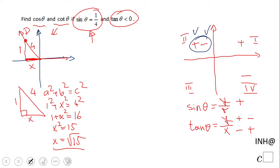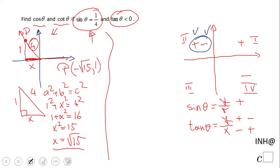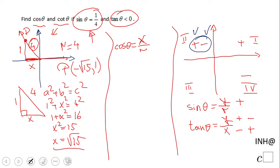But we need to be careful — going back to the picture, we notice x needs to be negative since we're in quadrant two. So the coordinates of point P are (−√15, 1), and of course r = 4. Now we can find cosine: cosine of theta is defined as x over r, so cosine of theta equals negative square root of 15 over 4.